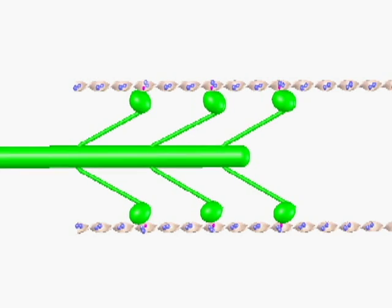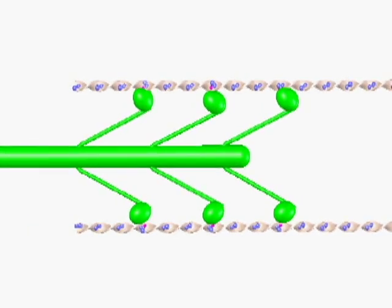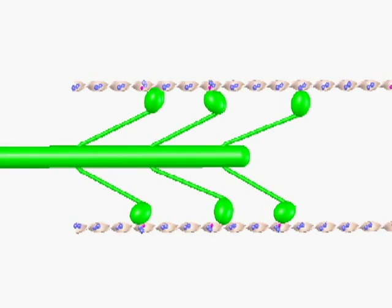In nature, trigger points or myosin heads would release on their own if you didn't have to keep doing the activity that causes them, but in modern daily life we can't always give our muscles the time to heal before we need to use them again.